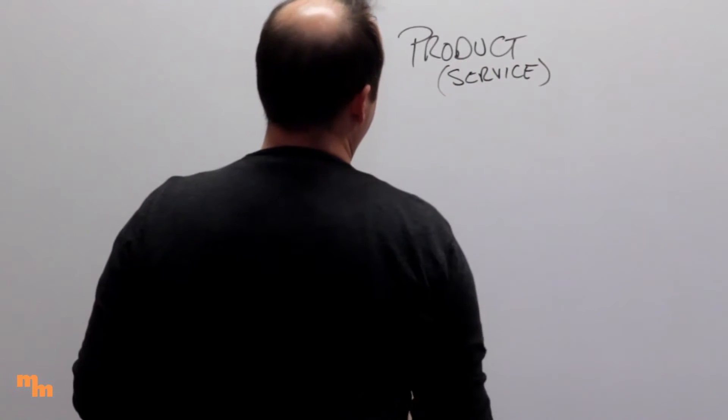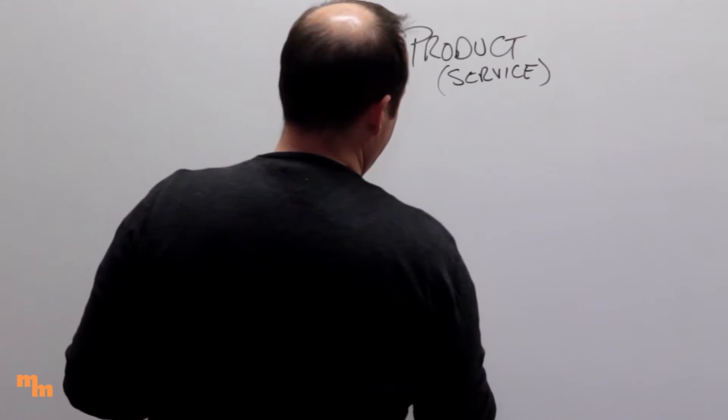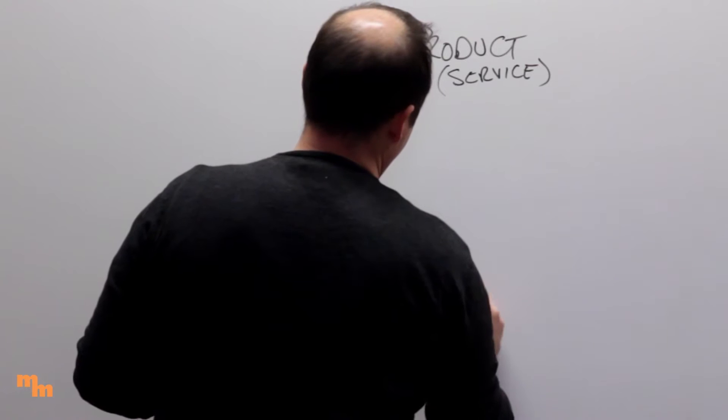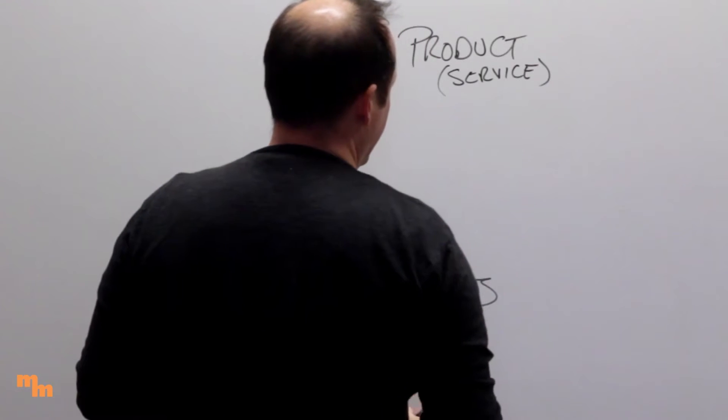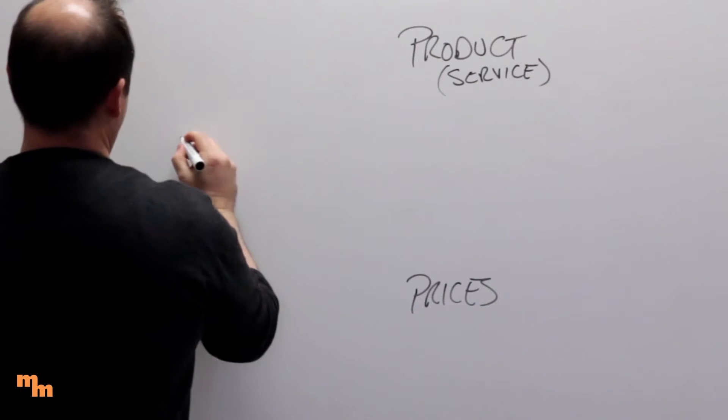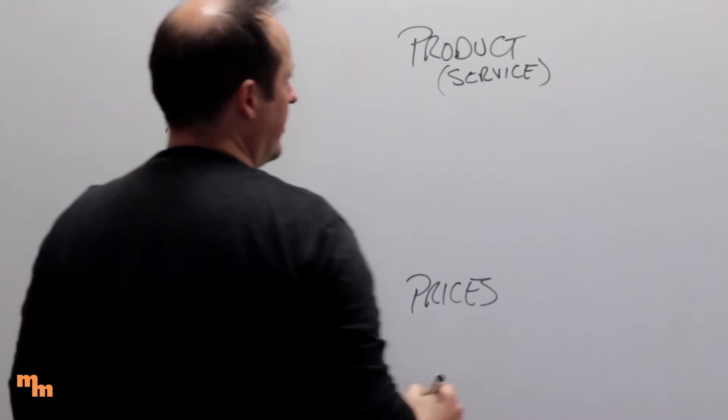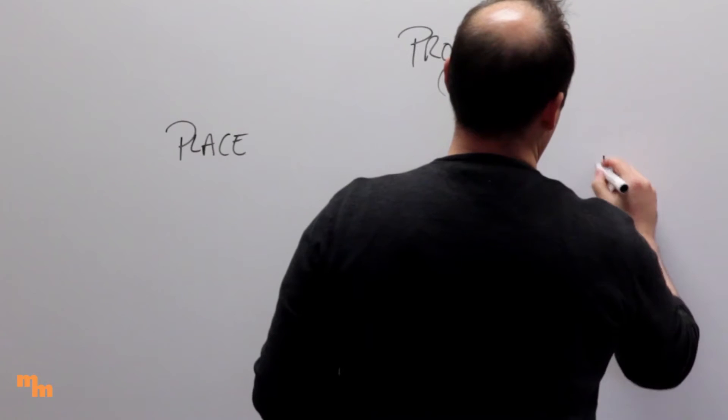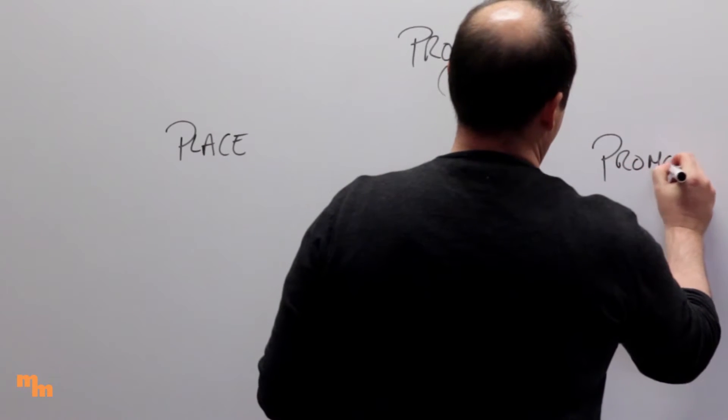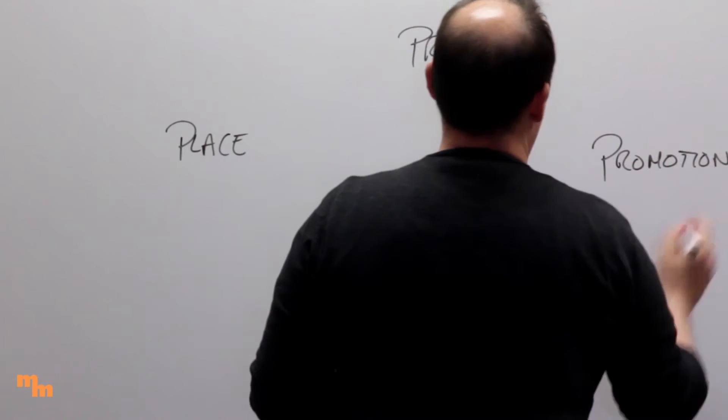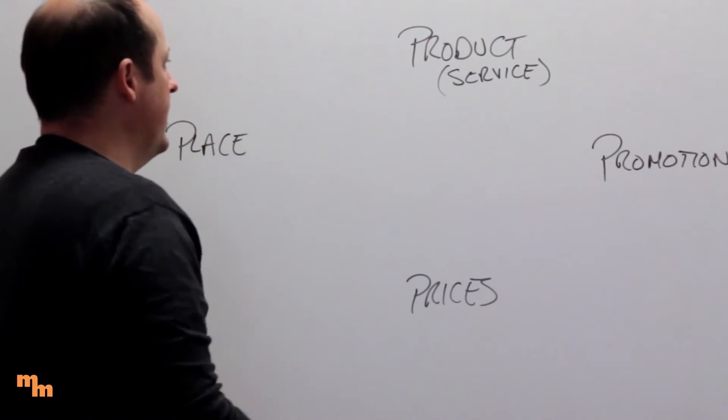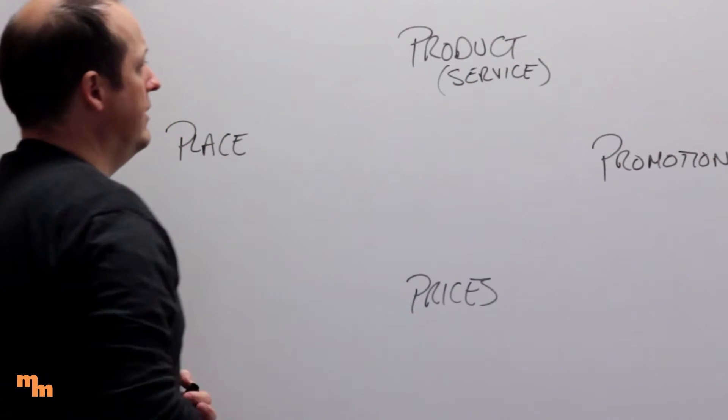We start to look at our price, which is how much our goods or services are going to cost. We also start to look at the place, and we begin to look at the promotion, which basically starts to talk to our four P's of our marketing mix.